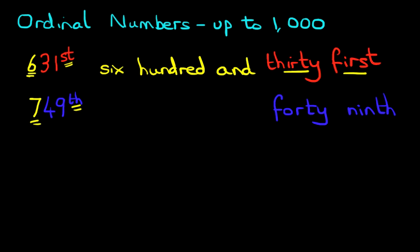How do we write that in words? Well, the 49th remains the same. The only difference is we write down 700, and we write that before it. Seven hundred and forty ninth. So, everything else remains the same. The only difference is the hundreds.